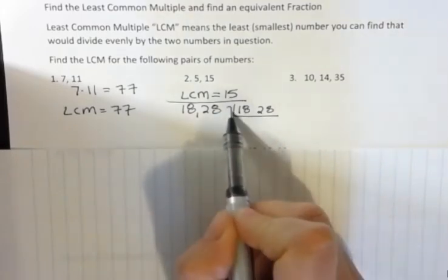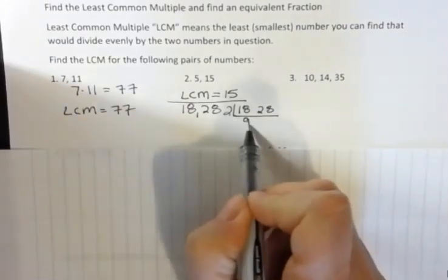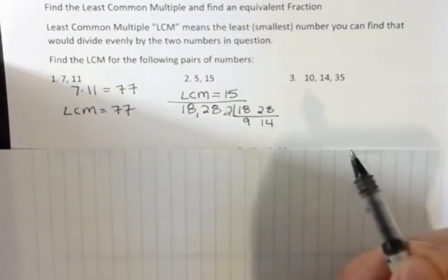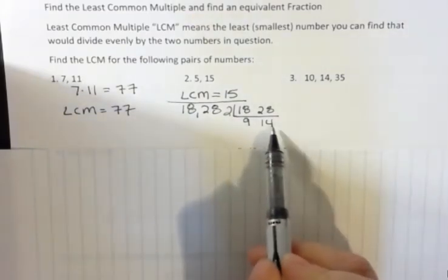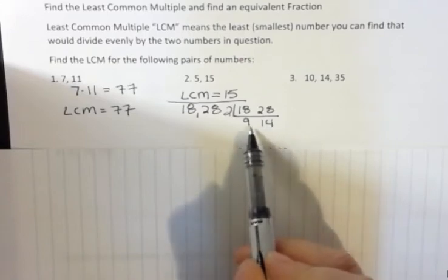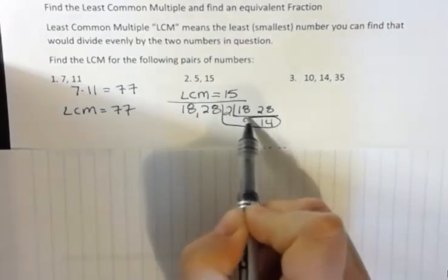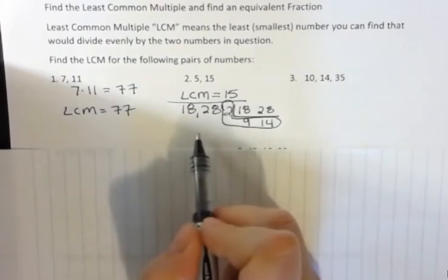And then I would say what number goes into both of these two numbers, and that is two. So I'd write that out to the side. Two goes into eighteen nine times, so I'm dividing. Two goes into twenty-eight fourteen times. Then I would say, is there anything that goes into both nine and fourteen? And if there was, I'd keep working. But there's not. Nothing that goes into those, except one. But one never helps us. So then I look at what I have in my L. That is for LCM, and I multiply those together.